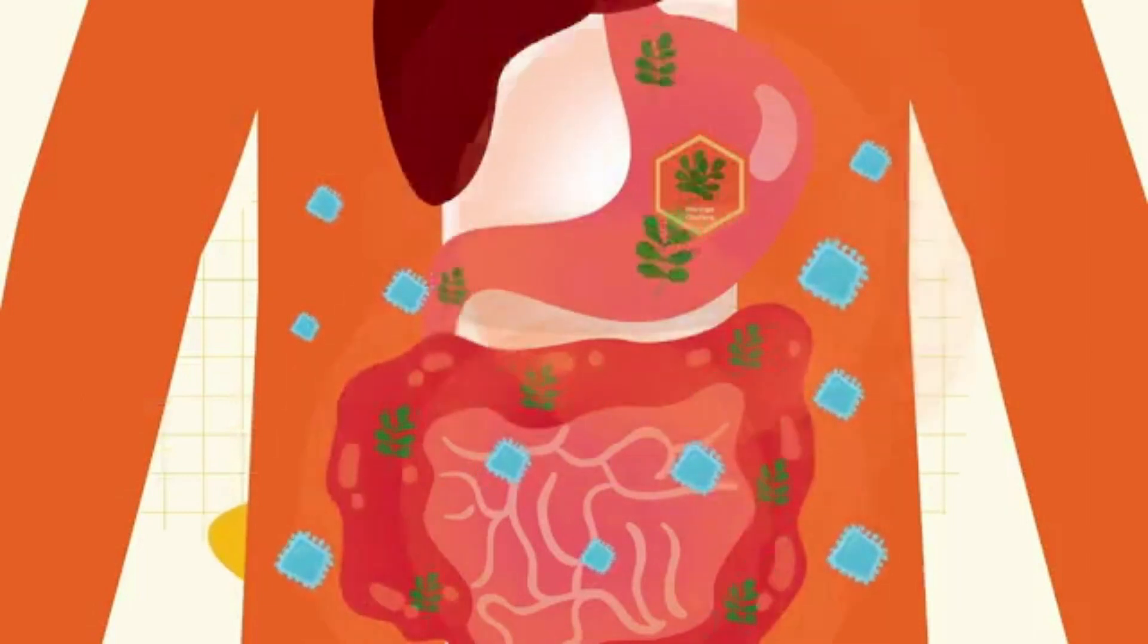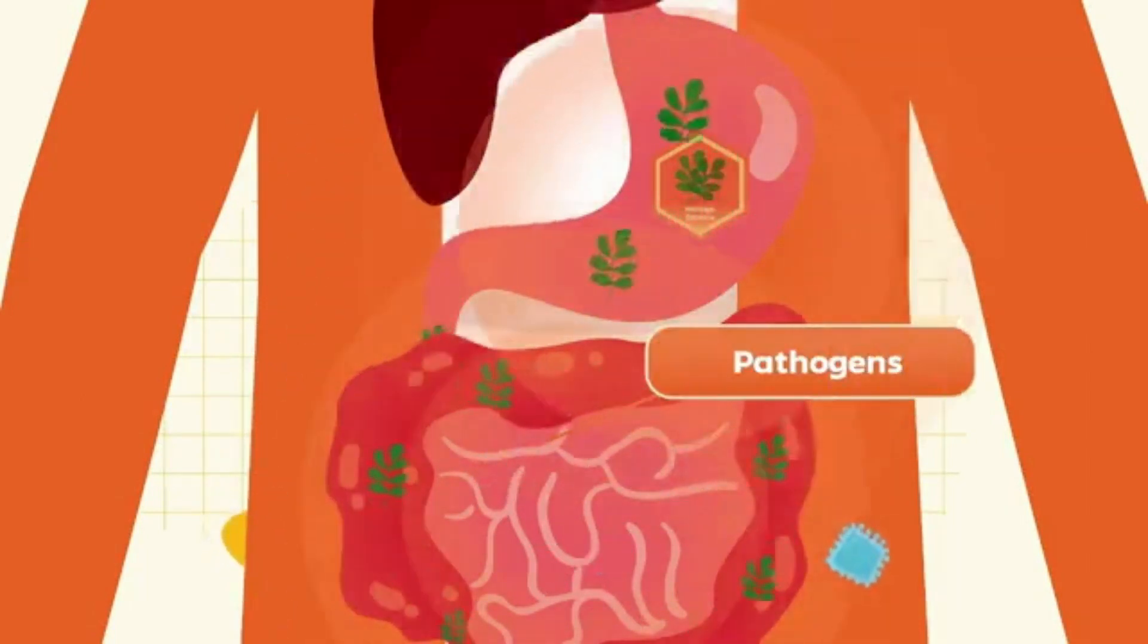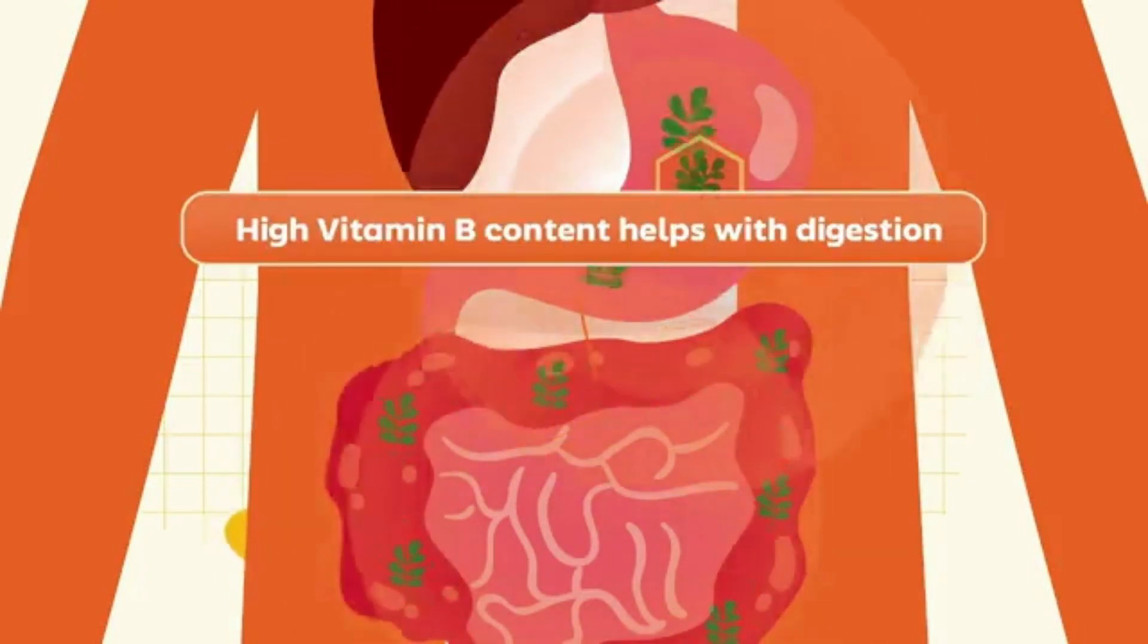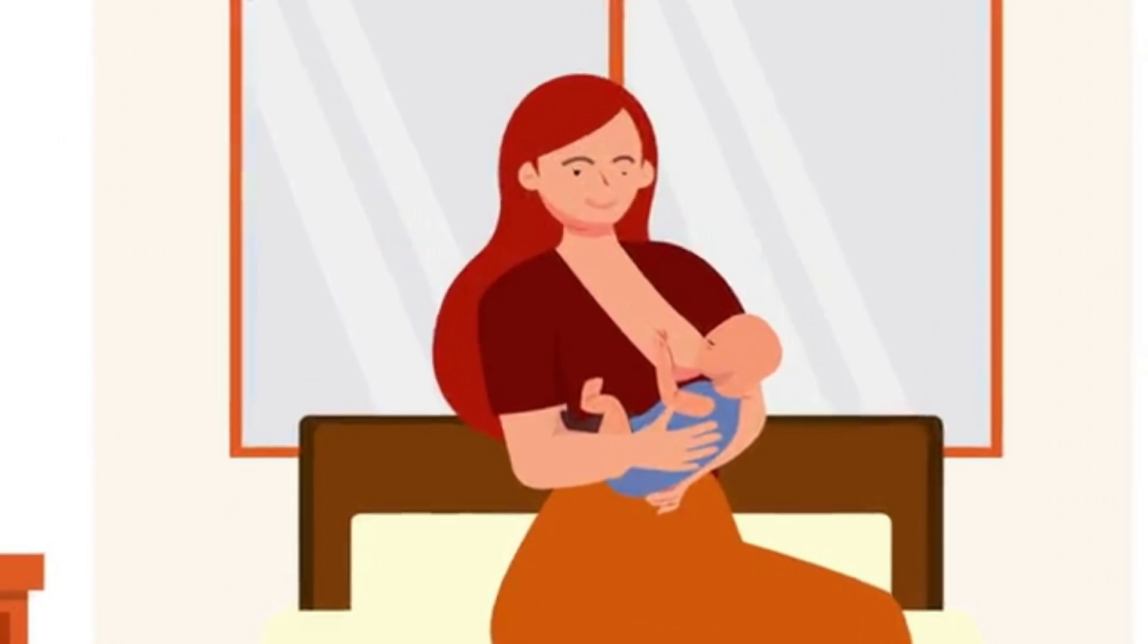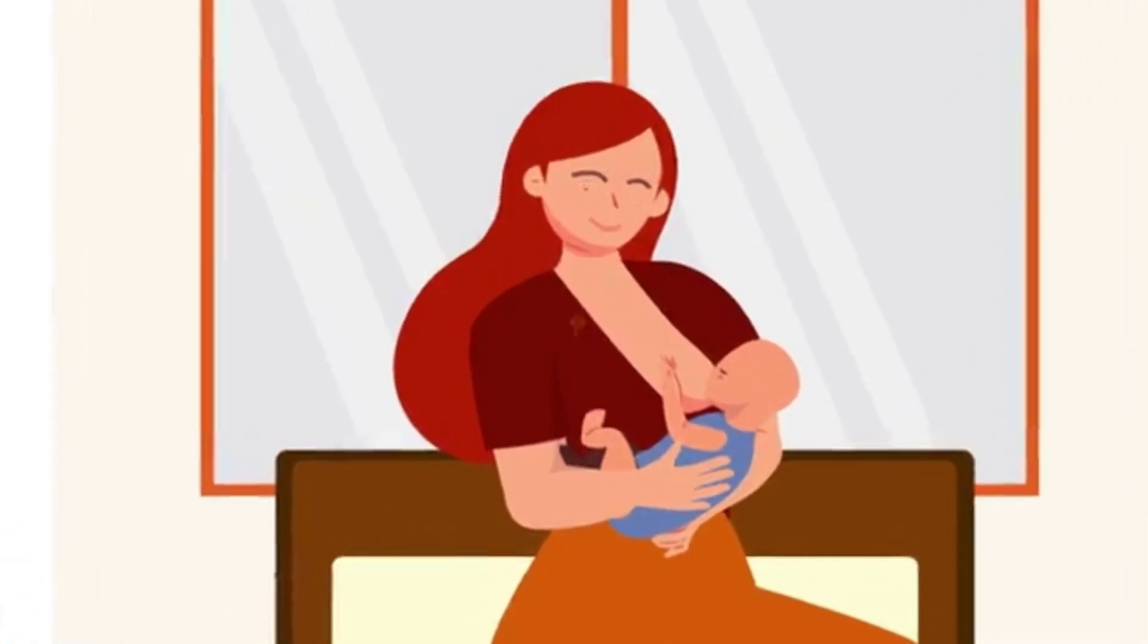The antibiotic and antibacterial properties of Moringa help inhibit the growth of pathogens, and its high Vitamin B content helps with digestion. It is a well-known secret amongst breastfeeding women that it increases breast milk production as well.